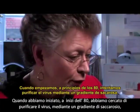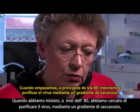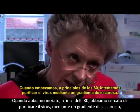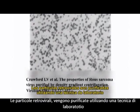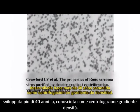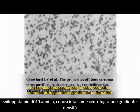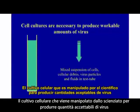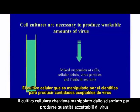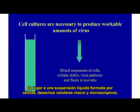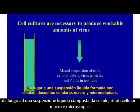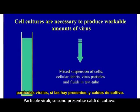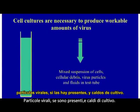When we started in the early 80s, we were trying to purify the virus by a sucrose gradient. Retrovirus particles are purified using a laboratory procedure developed over 40 years ago known as density gradient centrifugation. The cell culture undertaken by scientists to produce workable quantities of virus results in a liquid suspension made up of cells, macroscopic and microscopic cellular debris, virus particles if any are present, and culture fluids.